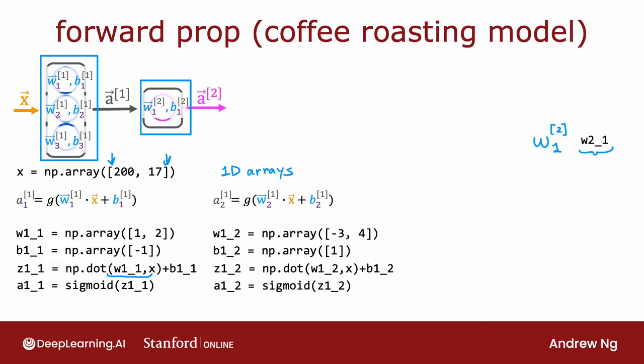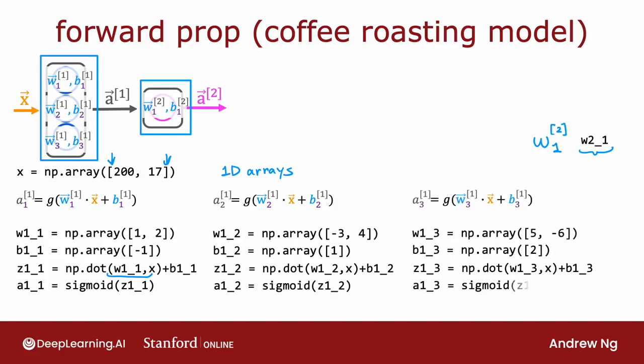And finally, you do the same thing to compute a1_3. Now you've computed these three values, a1_1, a1_2, and a1_3, and we like to take these three numbers and group them together into an array to give you a1 up here, which is the output of the first layer, and so you do that by grouping them together using a numpy array as follows. So now you've computed a1.